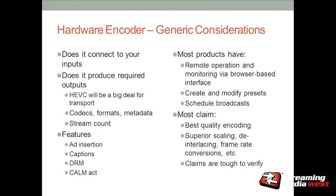If you're choosing hardware, there are generic considerations before you buy. Does it connect to your inputs? If you've got HD-SDI out, you need an encoder that does HD-SDI in, or some kind of converter. Does it produce the required outputs? HEVC is going to be a big deal — it's the next generation codec after H.264, particularly useful in a live environment because you get the same quality signal at a much lower bit rate. For most live event producers, getting the video out of the building is almost always a challenge.